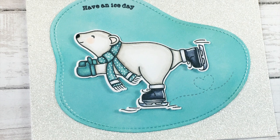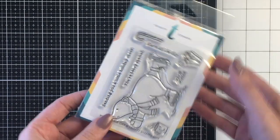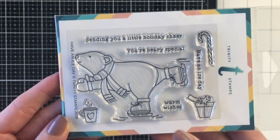Hello everyone, it's Jen. Welcome back to another project for Trinity Stamps. Today I'm going to be creating a fun little scene card using the Have a Nice Day stamp set. This is a 3x4 stamp set.